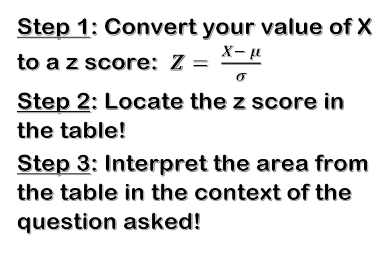First thing you're going to do is convert your value of x to a z-score using the z-score formula. We're then going to locate the z-score in our table, but most importantly we're going to interpret the area from the table in the context of the question that you've been asked to answer.